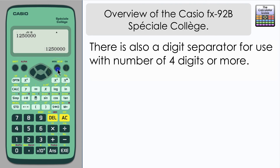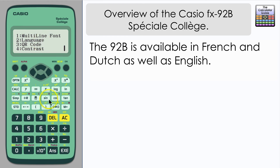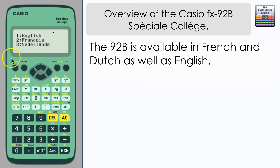Another slightly different feature of the 92B: if we go to the setup menu and look at the language functions, we can see it's not just English but also available in French and Dutch — which tells us where this calculator might be most commonly sold. As mentioned, there is also a fully French version of this calculator where all the buttons and decals are in French to allow French students to use it more easily.